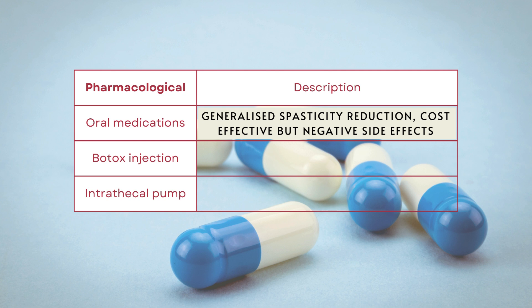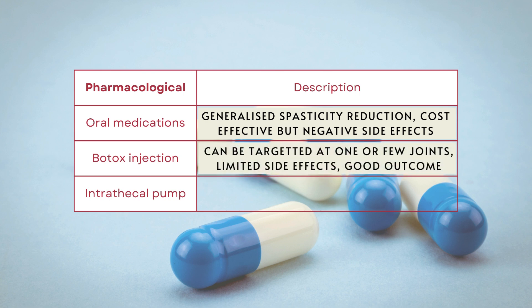Next, we have the more common and well-known option: Botox injections. Botox injections are very targeted and can be aimed at multiple joints. Their biggest advantage over oral medications is that they don't have side effects such as drowsiness or sedation. When used alongside NMES or serial casting, the effectiveness is quite good. However, Botox is not cheap, and there may be some risk of injury during administration of the injection.